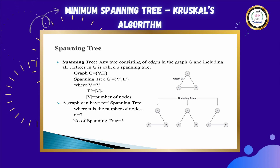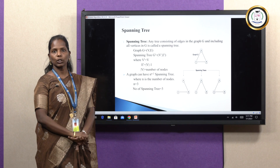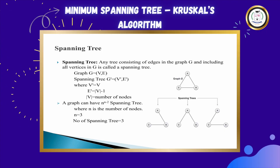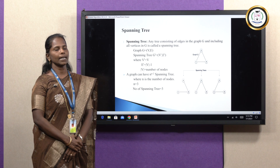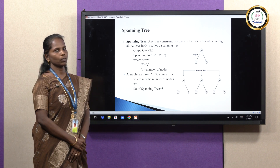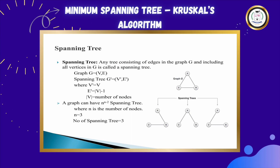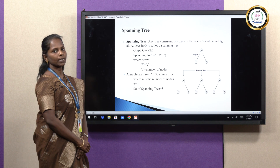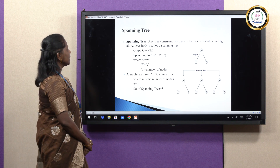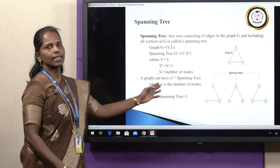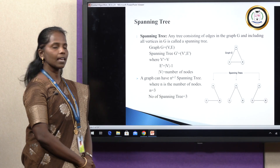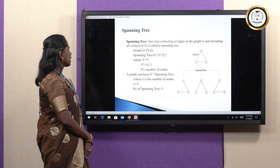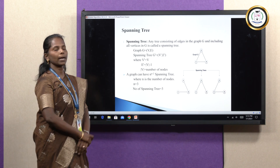The next term is spanning tree. Any tree consisting of edges in the graph and including all the vertices is called a spanning tree. Here I have given a graph with three nodes A, B, C and three edges A-C, C-B, and A-B. The graph is represented as G = (V, E). From this graph, I am going to construct a spanning tree, called G'. It is V' and E', where V' is same as V — the same number of nodes will be in the spanning tree.